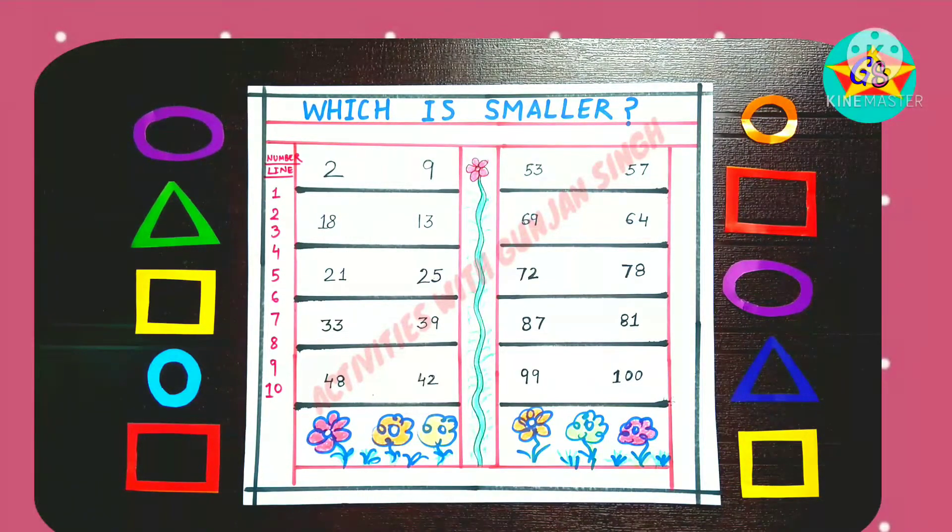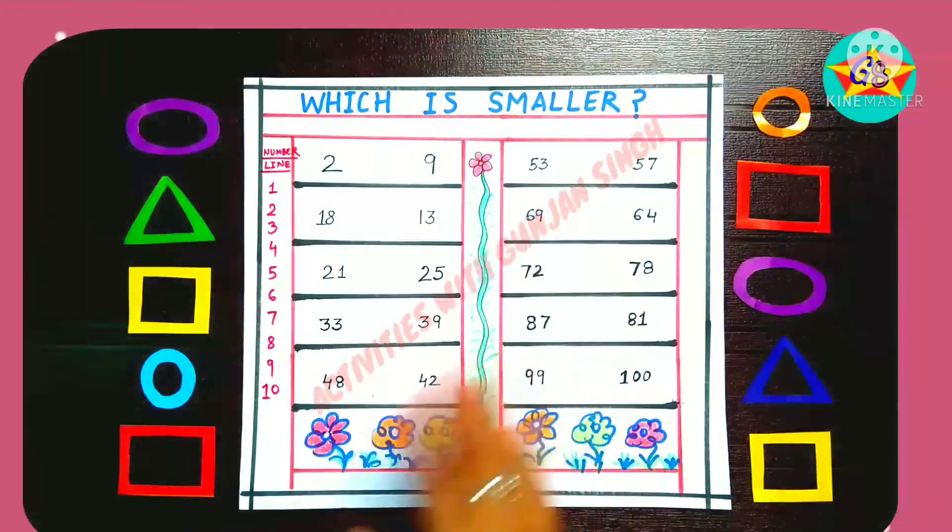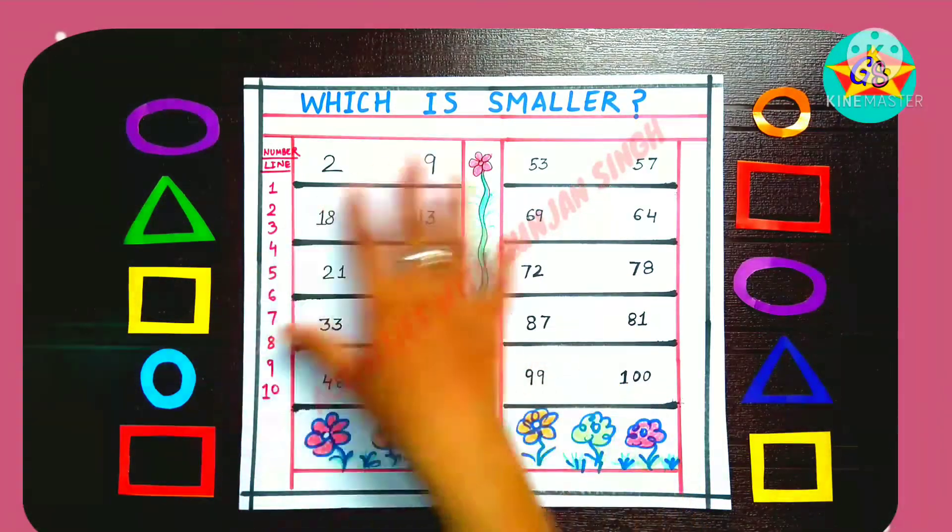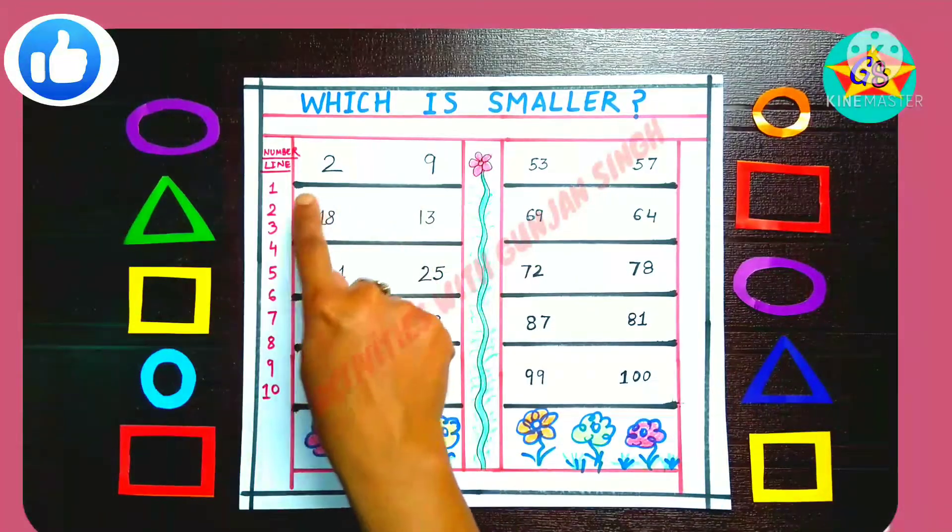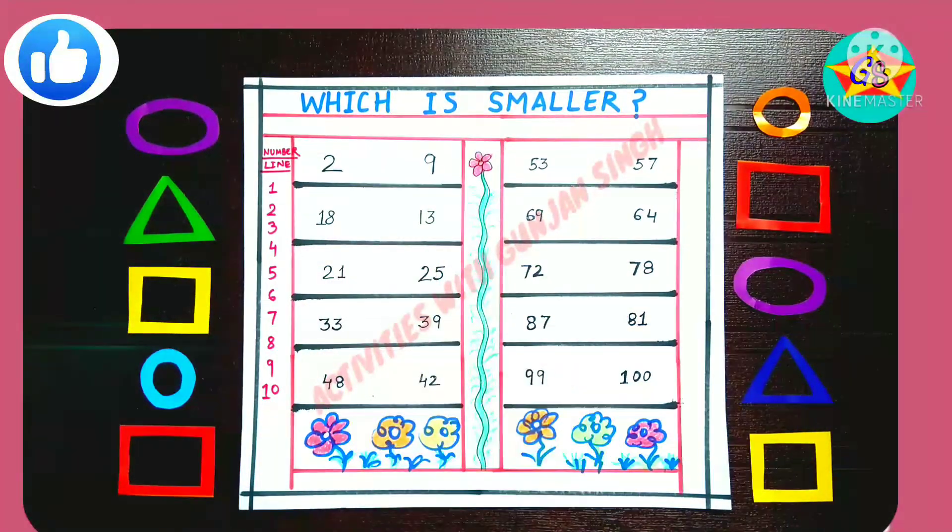So I have put 1 to 100 numbers here. One side is smaller and one side is bigger, so what we want to do to make this activity is have them complete it like this.